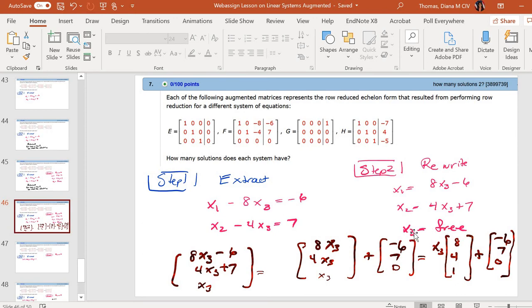But once I choose x3, so for example, if I choose x3 to be 0, x2 is then 7, and x1 is minus 6. So x3 can be chosen, but once it's chosen, the other two are prescribed. So x3 is what we call a free variable. I'm free to choose it, and the other two become prescribed.